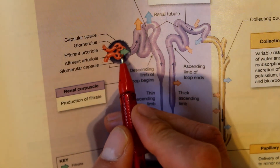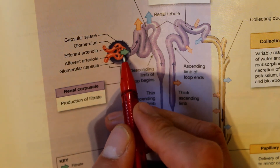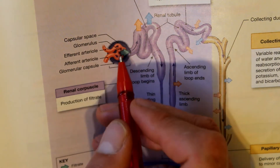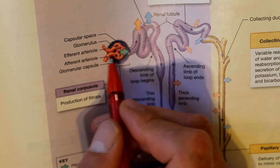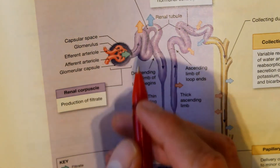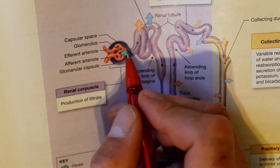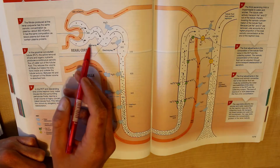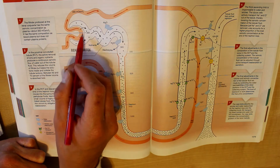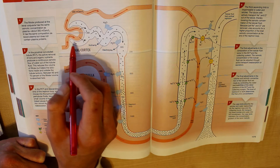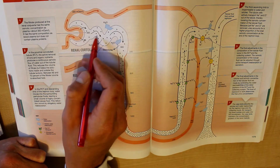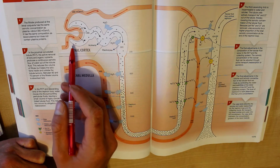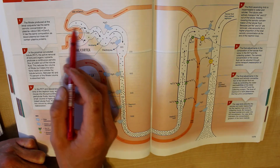At the renal corpuscle, salts, excess water, and urea get filtered. They get pushed out into the glomerular capsule out of the arterioles. The rest of the blood goes back via the efferent arteriole out of the capsule. The substances that were filtered out travel into the descending loop. Blood goes in, and because there is such high pressure inside this system, small molecules are pushed out of the blood and they travel into the nephron loop.